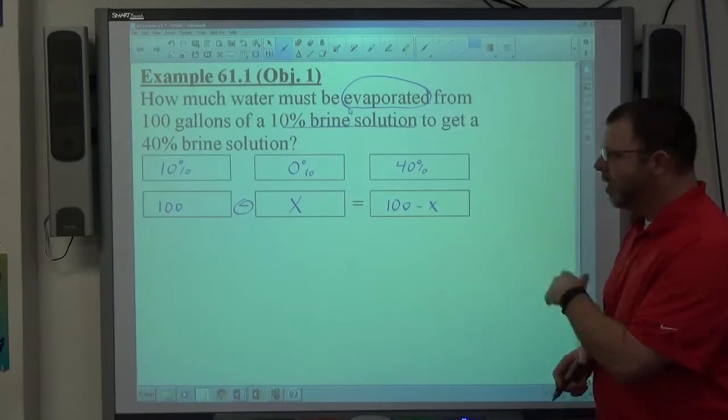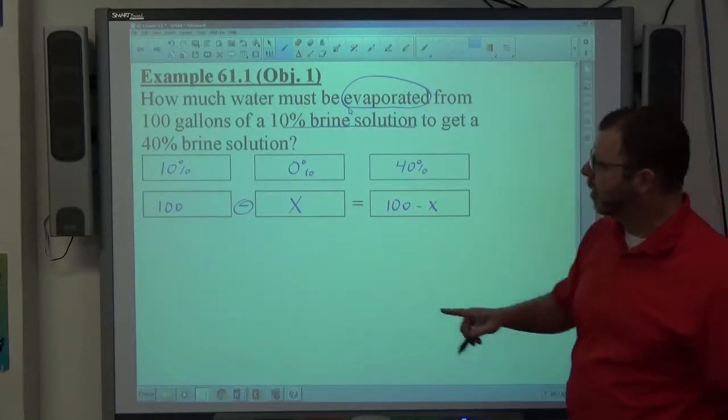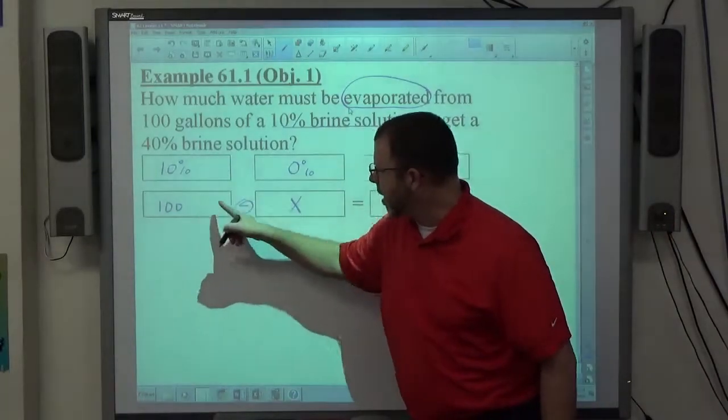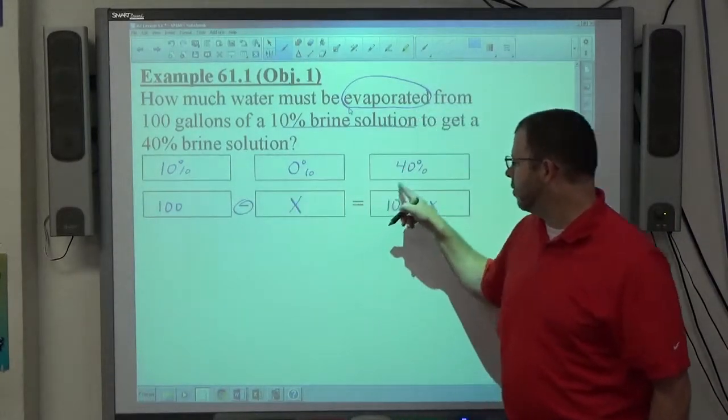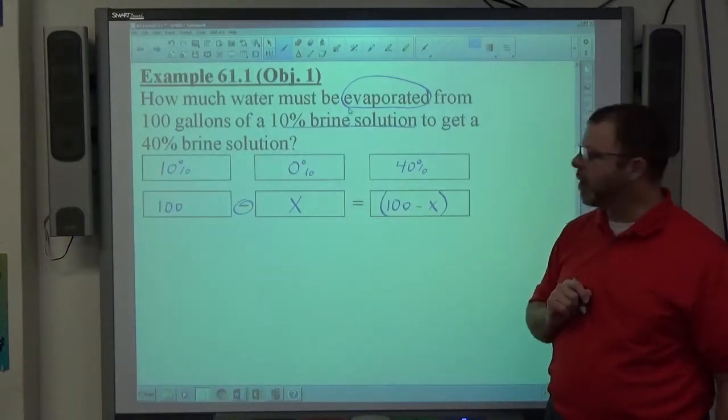All right, so that's the initial setup. Once we get everything set up in the boxes there like they were before, we multiply percent times amount minus this time, percent times amount equals percent times amount. This amount is a binomial, so we have to do a distributive property.